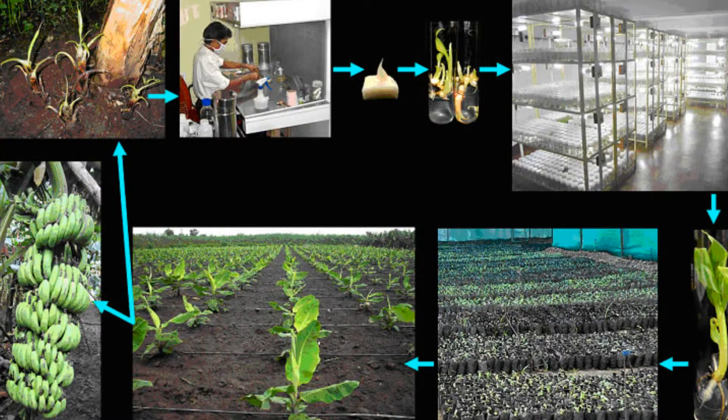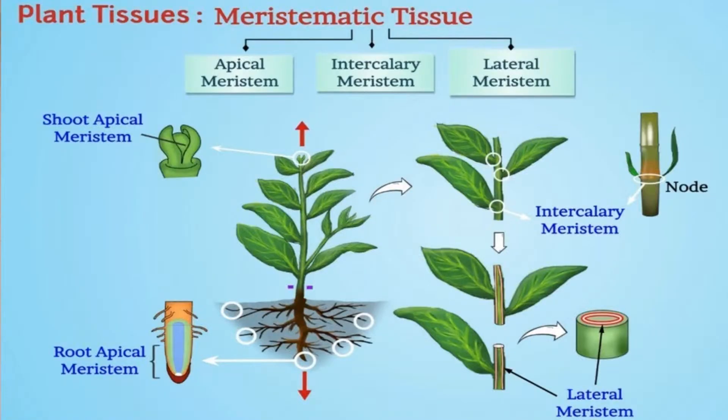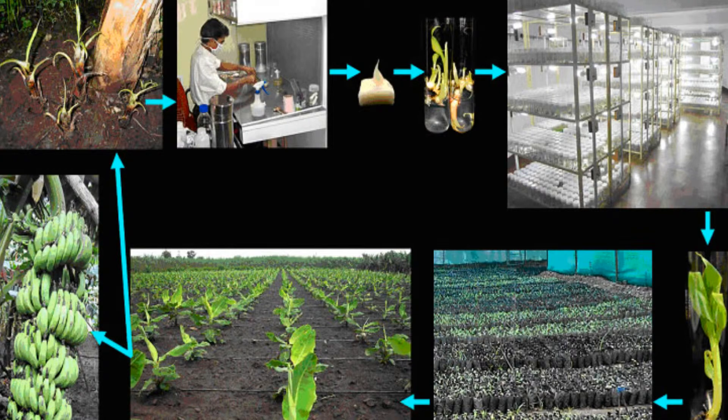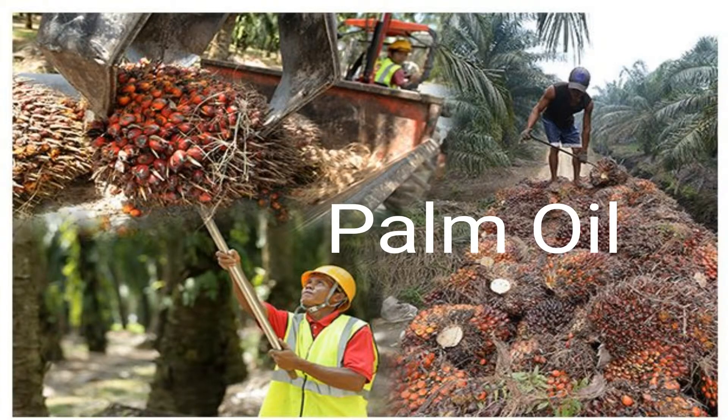Tissue culture technology is being used for the development of plants with new characteristics that are healthy and disease resistant. French scientist George Morel in 1964 proved that it's possible to obtain 40,000 plantlets from a meristem. Regular practice is to make some plants free from viral disease by culturing their meristems, such as potato tubers. In Malaysia, the reproduction of palm oil is done through tissue culture and they can also export this palm oil.